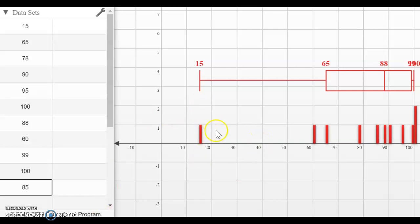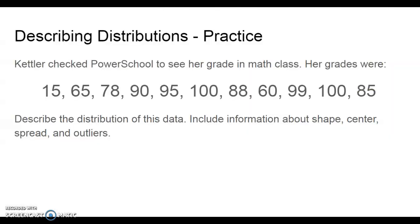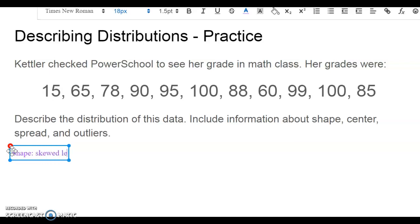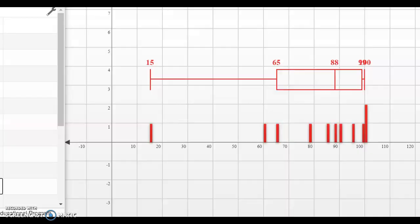So let's go record that on our slide. So describing the shape of the data, let's type this in. So the shape we know that it is skewed left. We know that most of the data is on the right. So when we think about that in context, that means that most of Kettler's scores were pretty high, right?